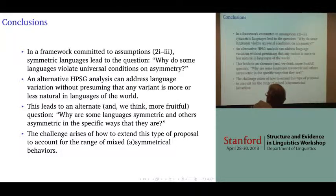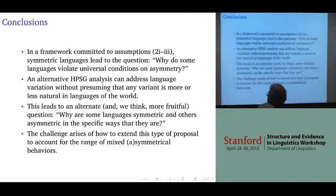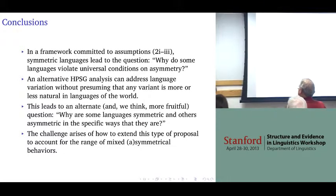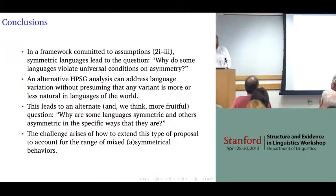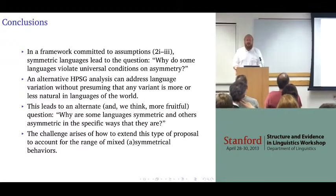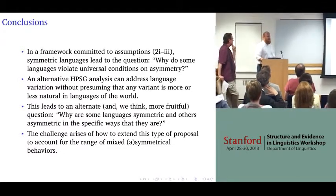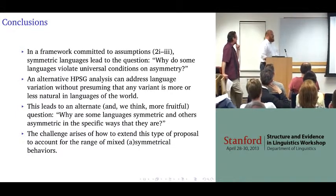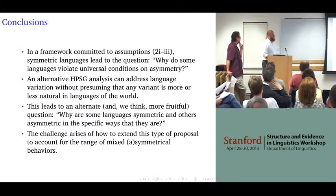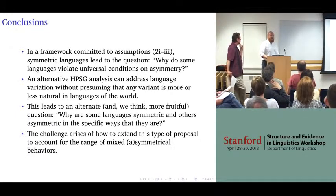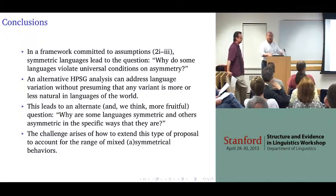Or maybe, why is it that some languages hide the universal conditions on asymmetry and don't show them to us — they cover them up with something?